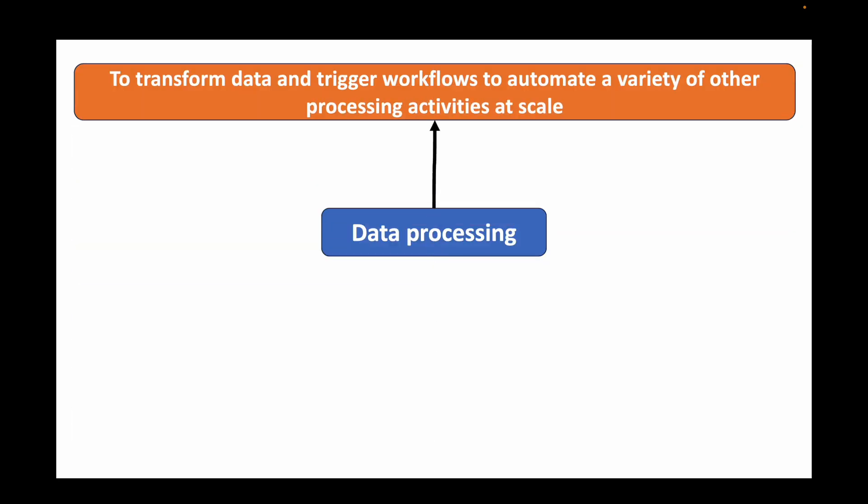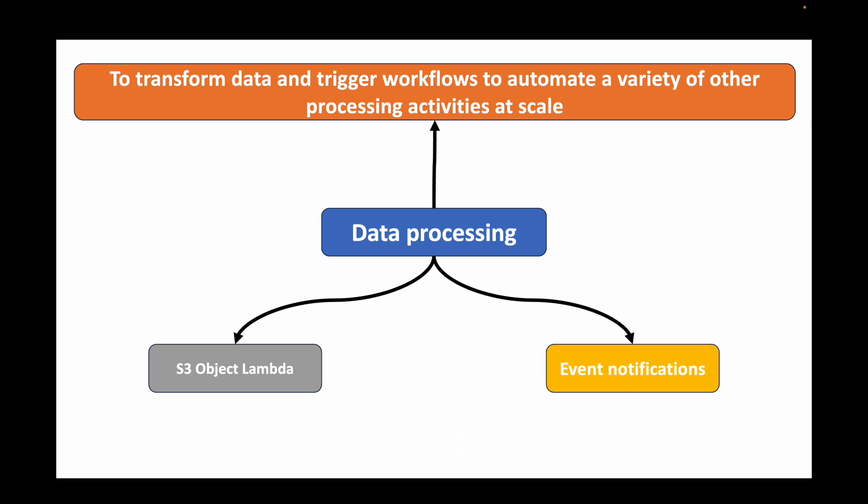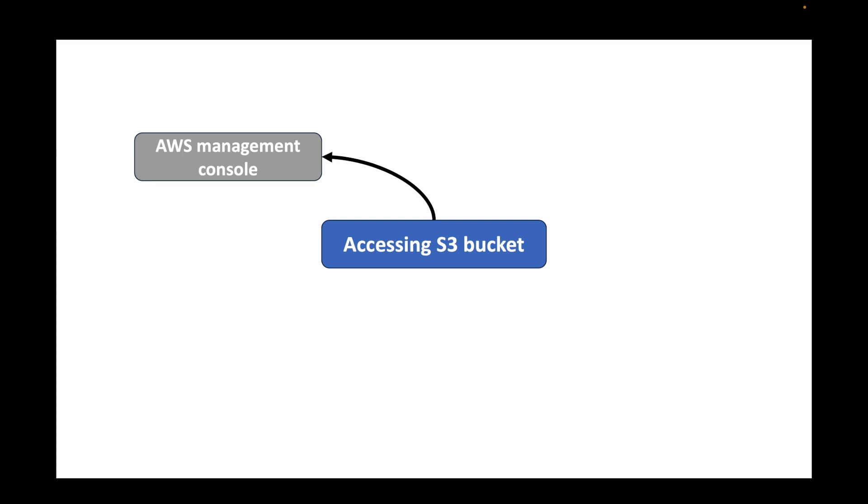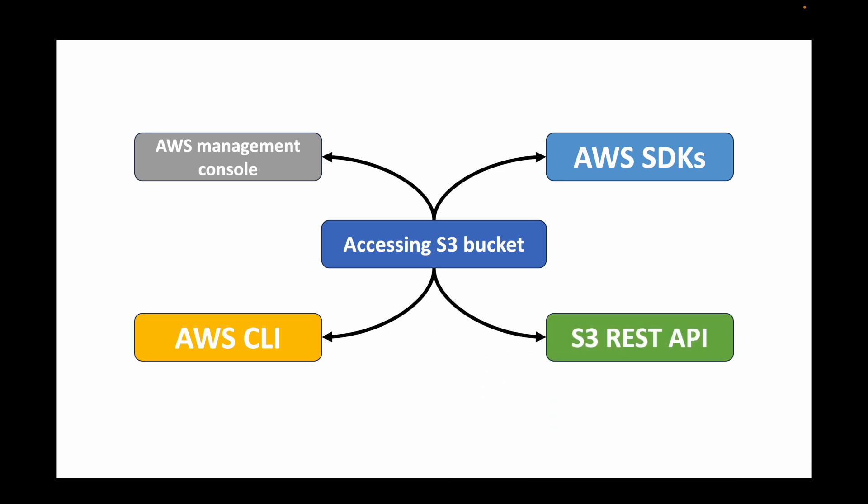The next feature is data processing. We can use this to transform data and trigger workflows — such as triggering Lambda functions — to automate a variety of processing activities at scale. Using event notifications, whenever new objects are uploaded or data is deleted, specific actions can be triggered. There are also different ways to access your S3 bucket: the AWS Console, the CLI, SDKs, and the S3 REST API. Mostly we'll use the console; for programmatic access we can use SDKs or REST APIs; and for command-line access, the CLI.